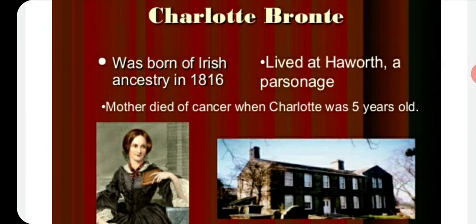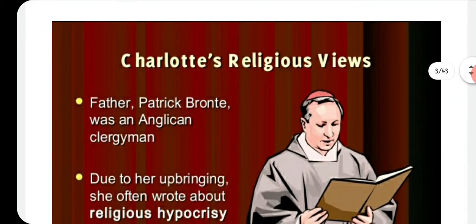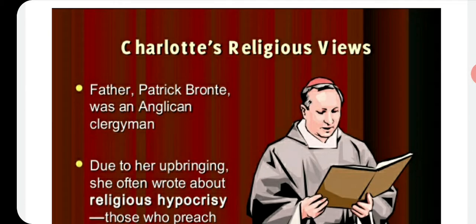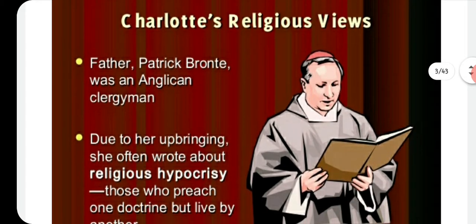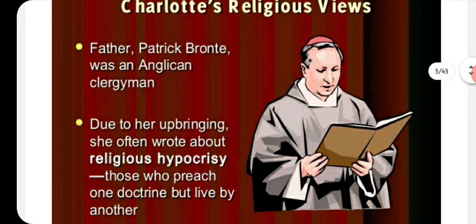Charlotte Brontë was born of Irish ancestry in 1816. Her mother died of cancer when Charlotte was five years old. Her father, Patrick Brontë, was an Anglican clergyman. Due to her upbringing, she often wrote about religious hypocrisy — about people who preach one doctrine but live by another.